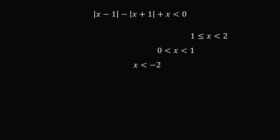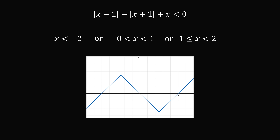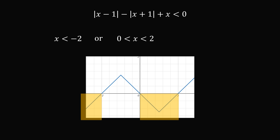So these are the conditions we have: x is less than negative 2, or 0 is less than x is less than 1, or 1 is less than or equal to x is less than 2. We can visualize the solution graphically — this is the graph of the absolute value of x minus 1, minus the absolute value of x plus 1, plus x — and we see where it's less than 0. In fact, we can combine the last two conditions: 0 is less than x is less than 2. So the final answer is: x is less than negative 2, or 0 is less than x is less than 2.